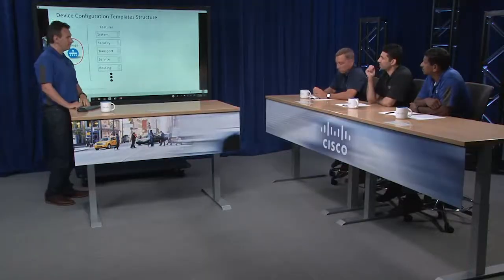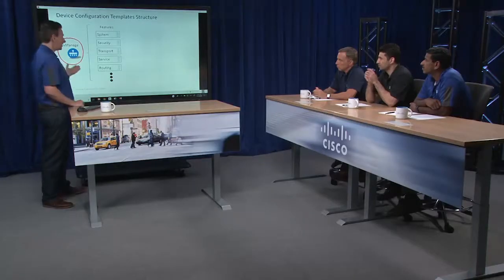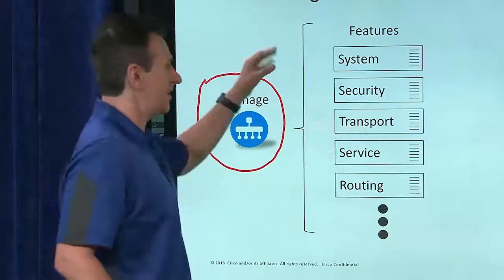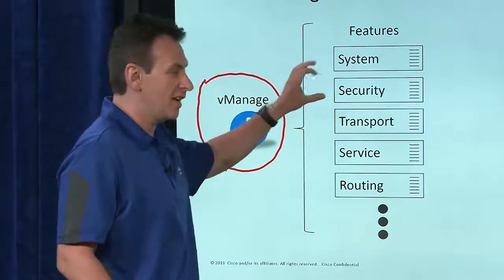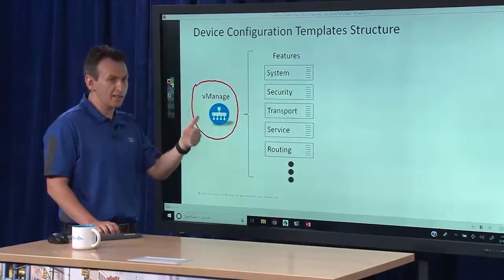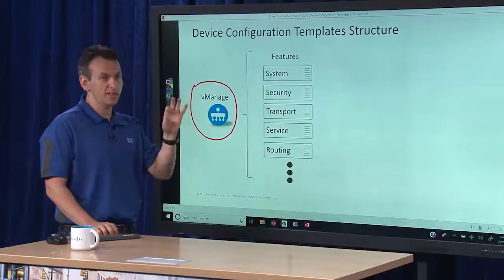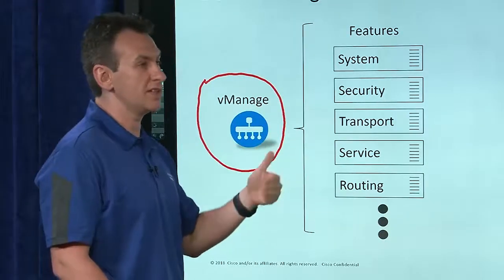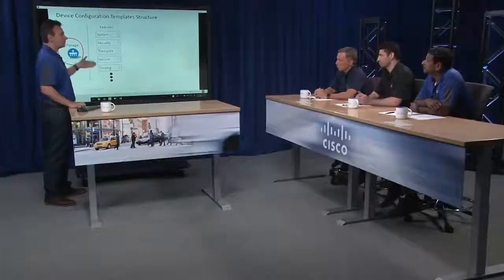If you think of the entire device, think of it as kind of an onion — you peel the onion and you have system, security, transport. It's a good analogy. When you have this holistic template, then you have the individual features, and then inside each individual feature you have the individual settings. You can drill down to every single configurable item in the device configuration and change it if you want, or leave it as default.